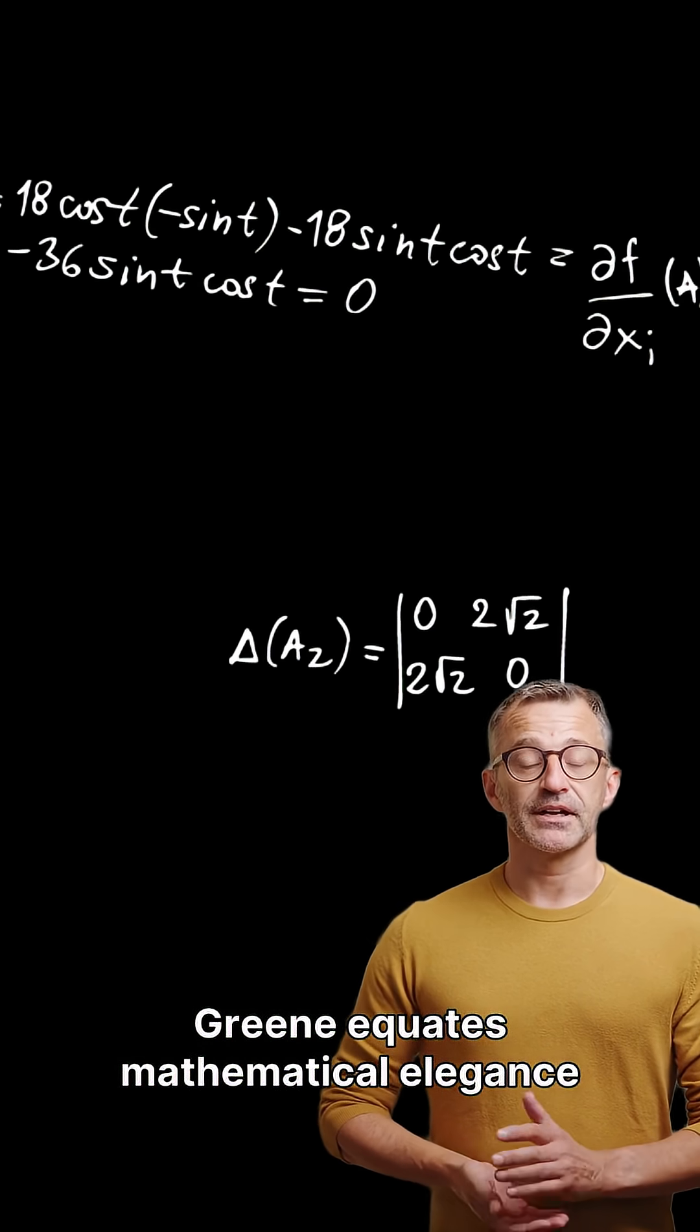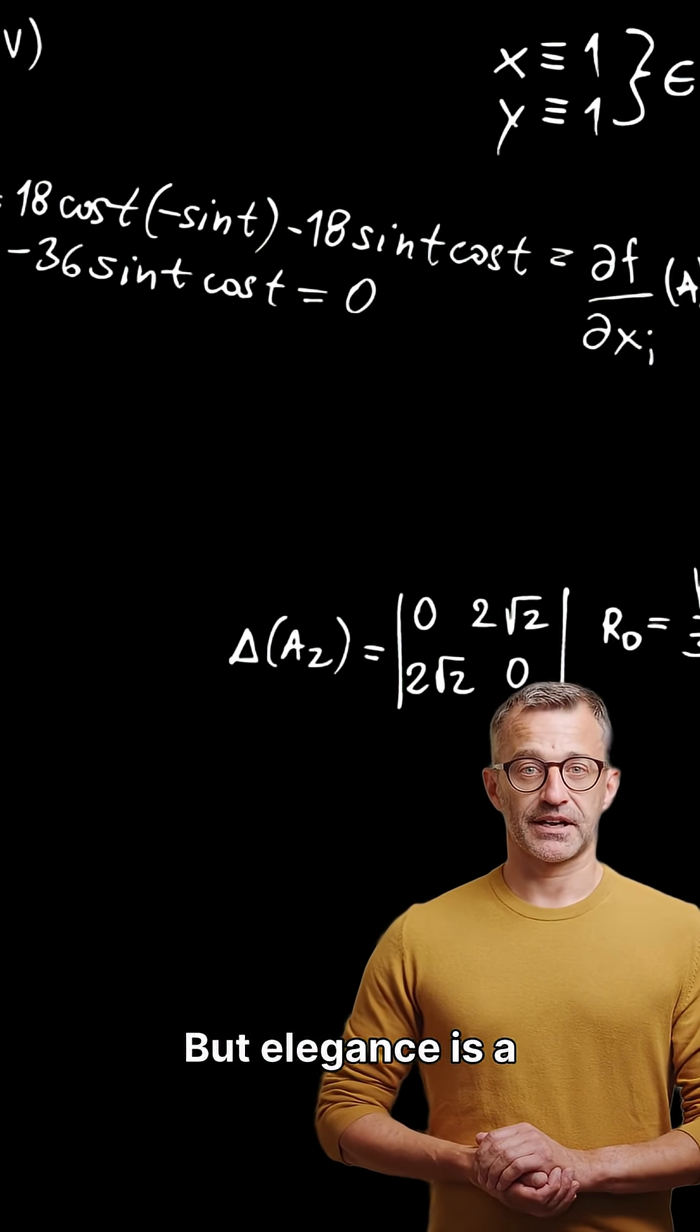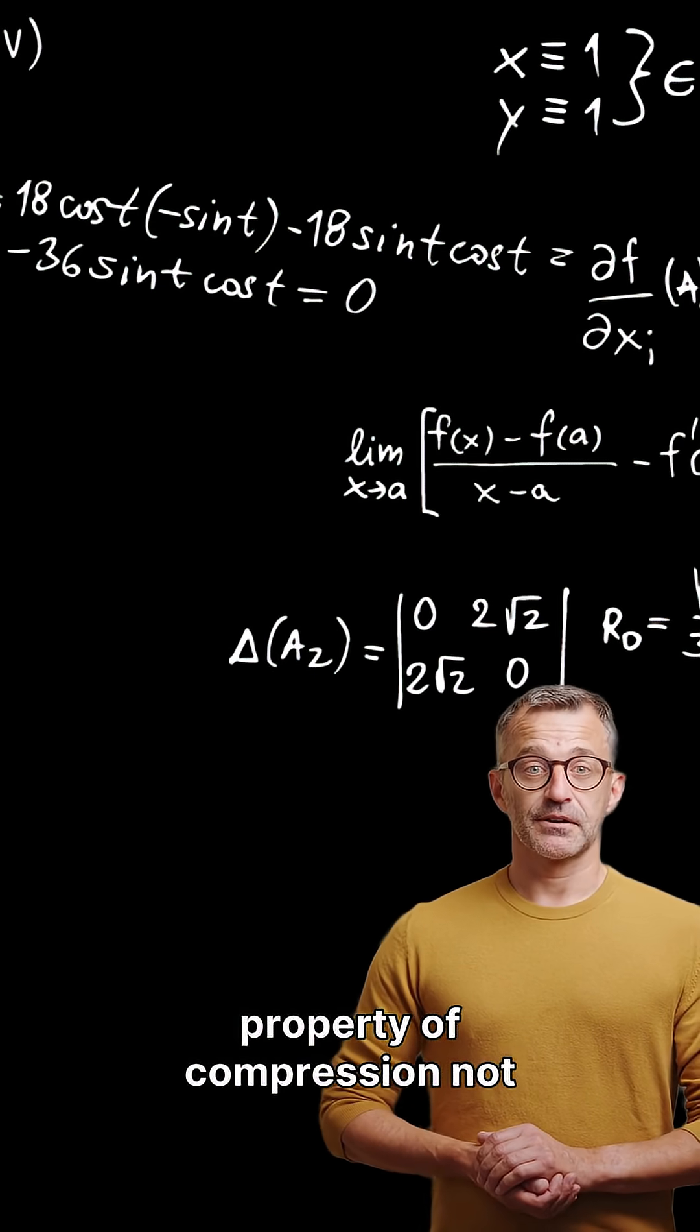Greene equates mathematical elegance with truth. But elegance is a property of compression, not of reality.